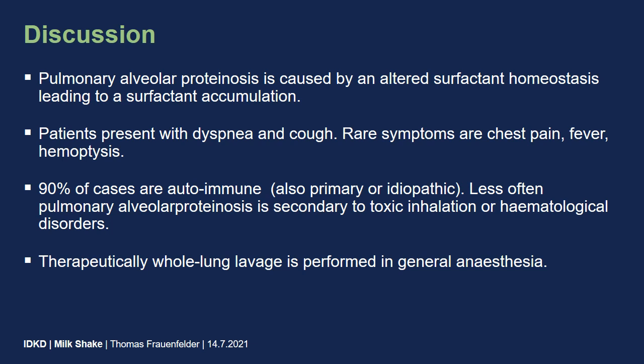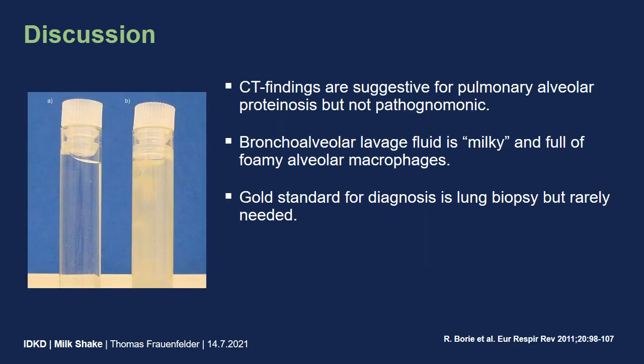Pulmonary alveolar proteinosis is caused by altered surfactant homeostasis and leads to surfactant accumulation in the secondary lobule. The patient presents with dyspnea and cough, but other symptoms are rare. 90% of cases are autoimmune, but as in our case, it can also appear after toxic inhalation or hematological disorders. CT findings are suggestive for pulmonary alveolar proteinosis with the crazy paving, and in combination with clinical findings and especially the bronchoalveolar lavage, it is diagnostic.